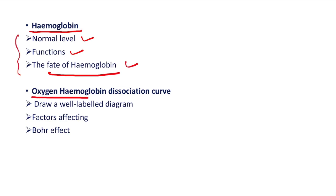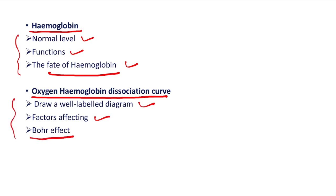Then, oxygen-hemoglobin dissociation curve. Here, draw a well-labeled diagram of the oxygen-hemoglobin dissociation curve — this can be the question. Then, factors affecting this curve and add a note on Bohr's effect — these can be the sub-questions.